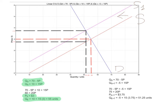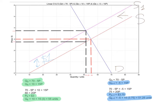Once you get the new supply curve — the supply curve with the tax — you equate it with the demand curve to get the new equilibrium price after the tax, which is $3.75, and the new equilibrium quantity is 51.25 units. By looking at the vertical distance between the two supply curves, you can measure that the tax is one dollar, but the equilibrium price has only risen from $3 to $3.75.